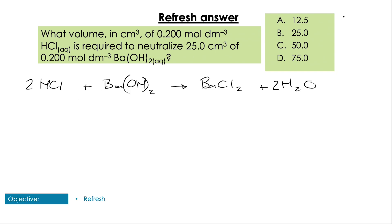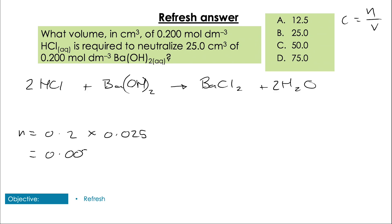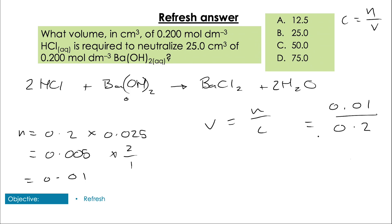Remember, paper one — no calculator. So we're going to use our C = n/V calculation and first we're going to calculate our number of moles of barium hydroxide, which is going to give us 0.005 moles. Now we use the limiting reagent, multiply that by 2 over 1 from the equation, and then use that number of moles in our volume calculation to give us 0.05 decimetres.